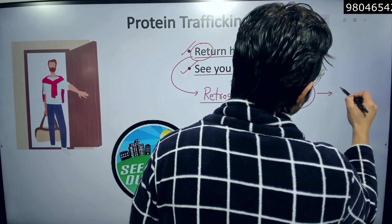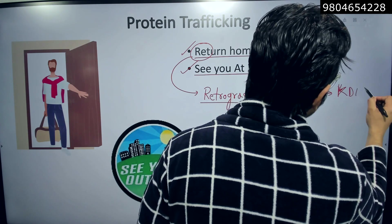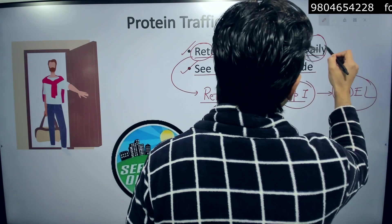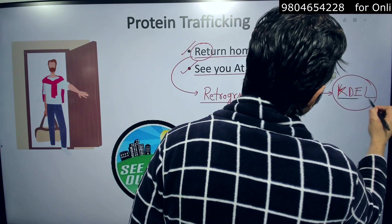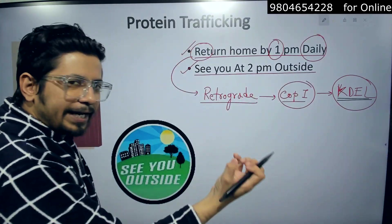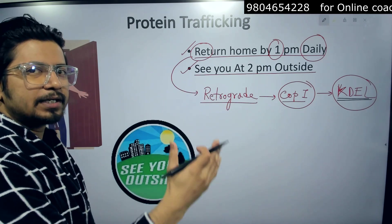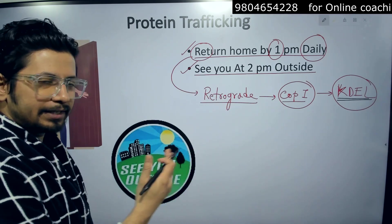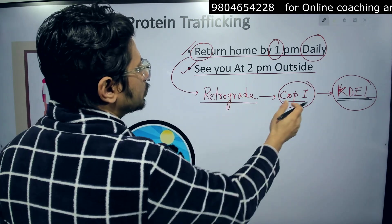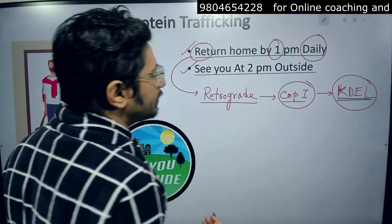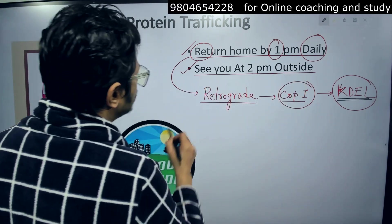'Daily' in the mnemonic gives us 'Del' — the KDEL signal. The KDEL signal must be present in order to retrieve a vesicle back from the membrane to the Golgi apparatus and toward the ER. So retrograde transport uses COP1 vesicles and requires the KDEL receptor to take proteins back toward the ER.